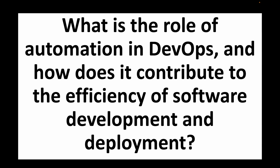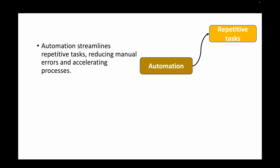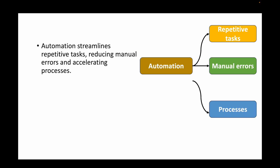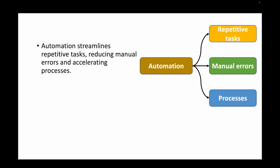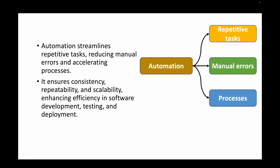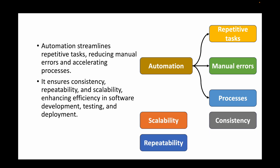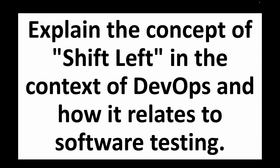The next question is: what is the role of automation in DevOps and how does it contribute to the efficiency of software development and deployment? Automation helps us streamline repetitive tasks — instead of manually doing the same task multiple times a day or week, we trigger a job that does the work for us. This reduces manual errors, accelerates processes, and ensures consistency, repeatability, scalability, and efficiency in software development, testing, and deployment.